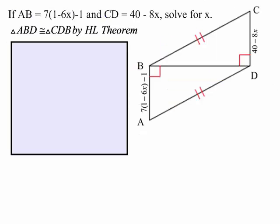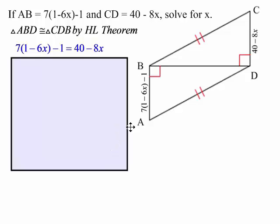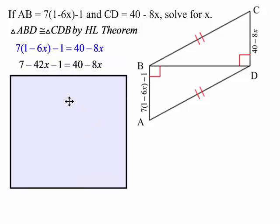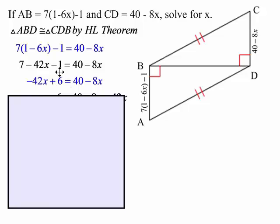So let's apply it. I wrote this out ahead of time just to make it neat. So I said that this expression for this leg is equal to the length for this leg. And then what did I do here? I distributed the 7, and then I combined like terms.